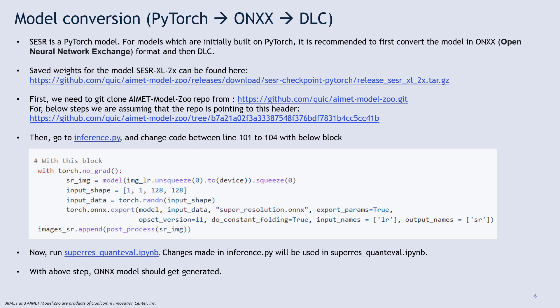This additional code will save the PyTorch model to ONNX and will fix its input dimension. Now run the super_res_quant_eval.ipynb file — it is a Python Jupyter notebook. Now we have the ONNX model ready.